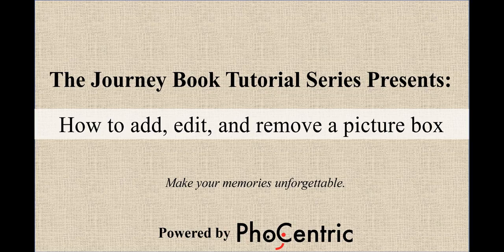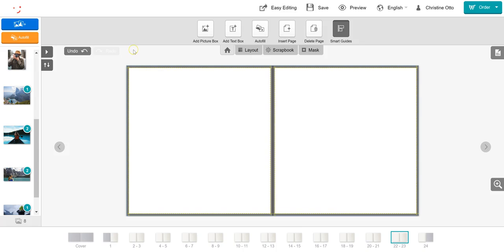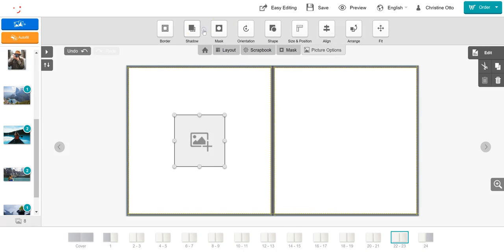Welcome to the JourneyBook tutorial series. Today I will be showing you how to add, edit, and remove a picture box from your custom JourneyBook. To add a picture box to your custom JourneyBook, select the home button and click on the add picture box button. By clicking on this button, a picture box will appear on the screen before you.